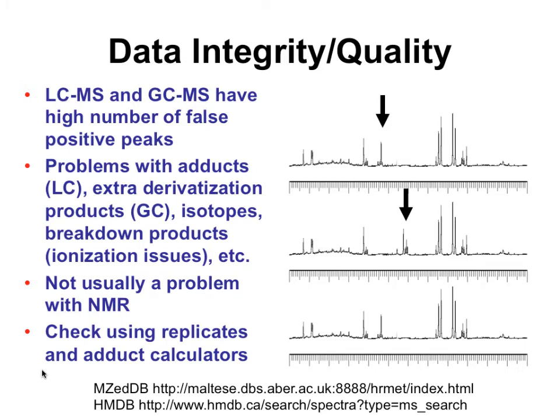So the data integrity issue, it's a particular problem with LCMS. It is also a problem with GCMS. There's lots of fake peaks in all of the data. So we learned about adducts, neutral loss issues. In GCMS there's the extra derivatization products and that's why you have to run blanks. There are isotope peaks and you have to do deisotoping. There are inadvertent breakdown products and you have to deal with those. This issue of false positives is not a problem with NMR. That's one of the reasons why we chose to do it as an example. It was just a little cleaner for you guys, but since most people don't do NMR, it was done as largely an example.